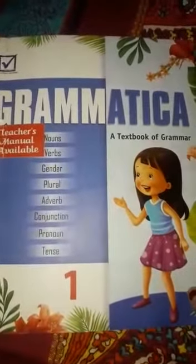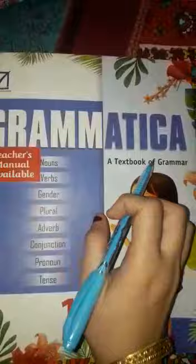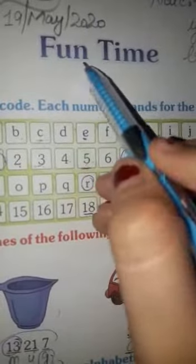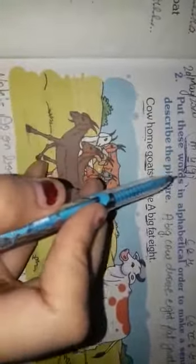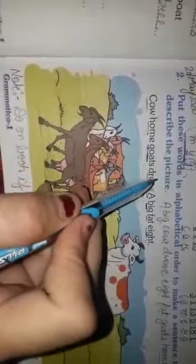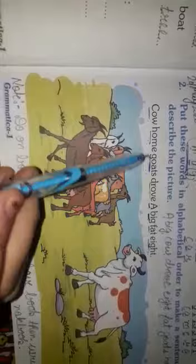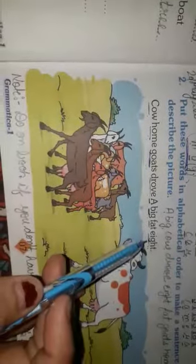Good morning students. This is a book of English grammar — the book name is Grammatica. Now we do lesson number two of PA 1. Lesson name is Fun Time. Now we do the second part of lesson number two: put these words in alphabetical order to make a sentence to describe the picture. The words are given.